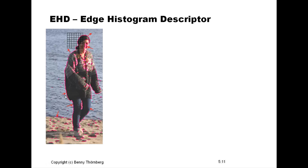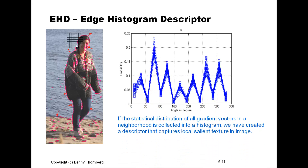We continue by analyzing a small local neighborhood of pixels and computing the histogram of the statistical distribution of the orientation of the gradients. On the y-axis you see the probability of occurrence, and on the x-axis you see the angles of the gradients ranging from 0 to 360 degrees — the histogram being an estimation of the probability density function. We have been able to create a descriptor that captures the texture present in the image on a local basis within this local neighborhood.